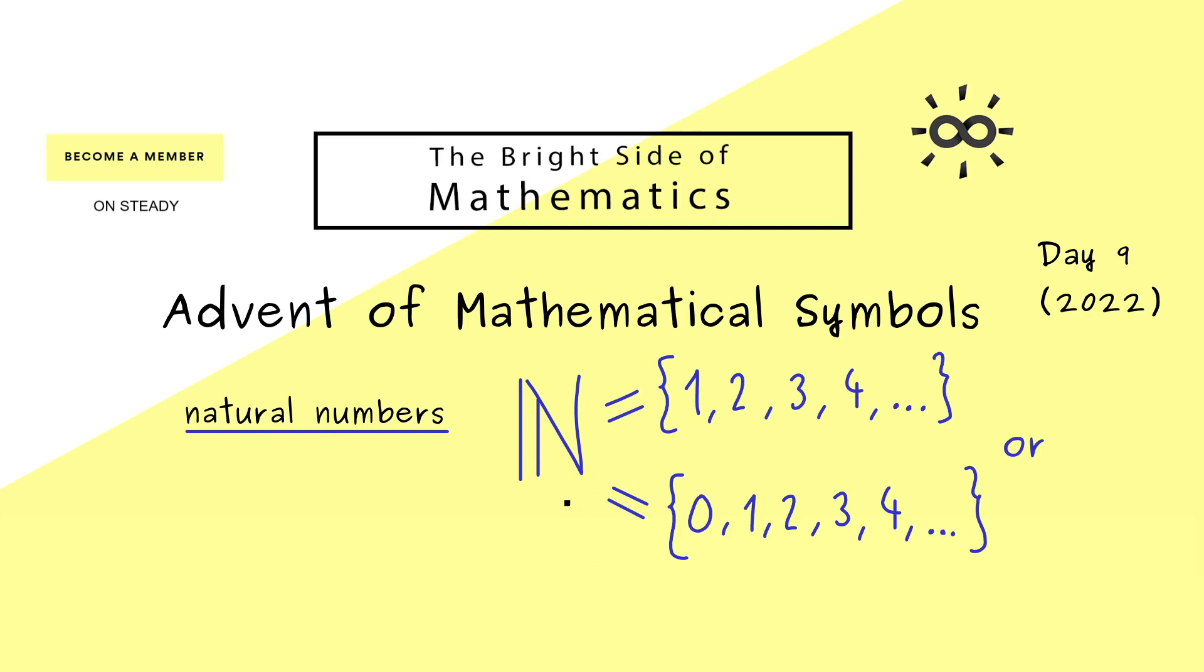This happens because the natural numbers, including the zero element, represent a very important mathematical structure. Namely, it's a so-called monoid.